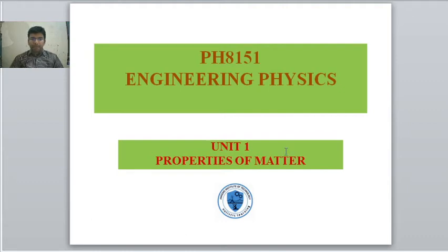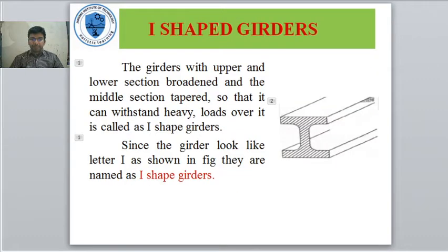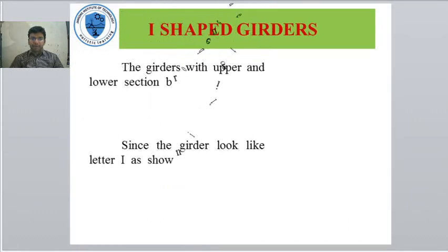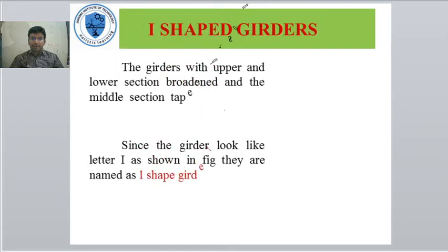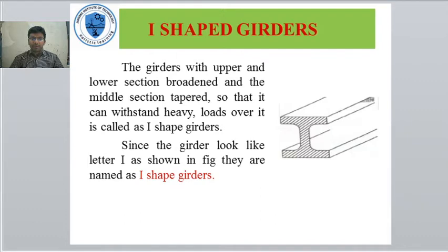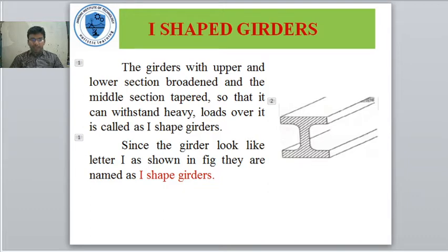In this video, we will discuss I-shaped girders. These are girders with upper and lower sections broadened and the middle section tapered, so that they can withstand heavy loads. They are called I-shaped girders because they look like the letter I, as shown in the figure.